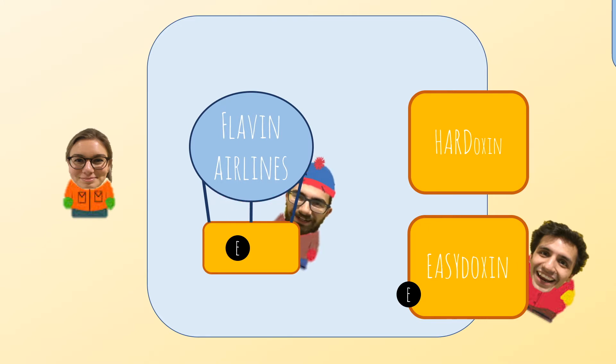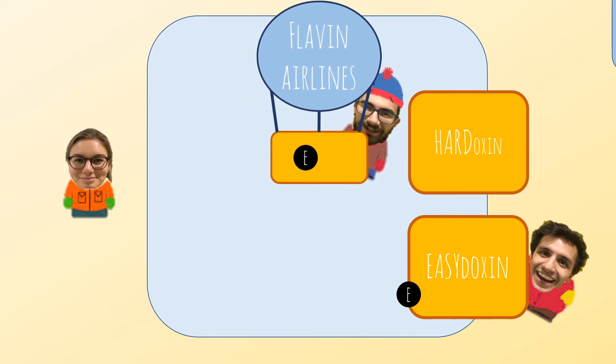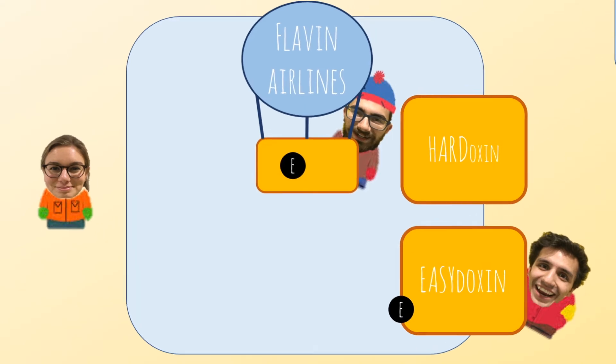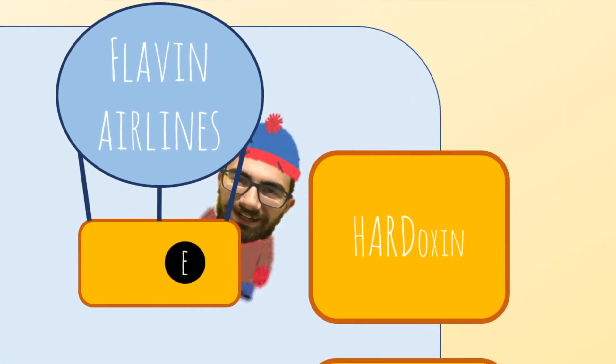Now, the electron bifurcation takes place. Because the flavin lost one of its electrons, it becomes really unstable and goes up into a higher energy level, like a balloon that lost some of its weight and goes up in the air.